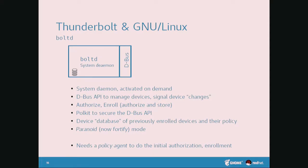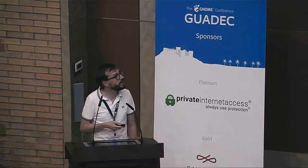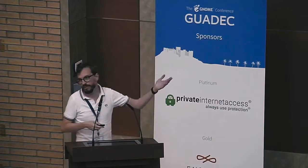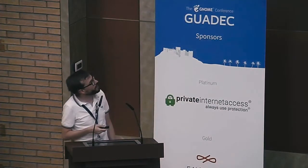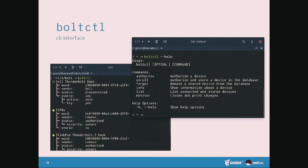We have a more paranoid mode for situations like a conference where you have to plug into random cables — you can disable automatic authorization in the control center. There's also a command line program called boltctl — in the good 'ctl' fashion of journalctl and whatnot. I blame Lennart, because Lennart is probably blamed for everything.